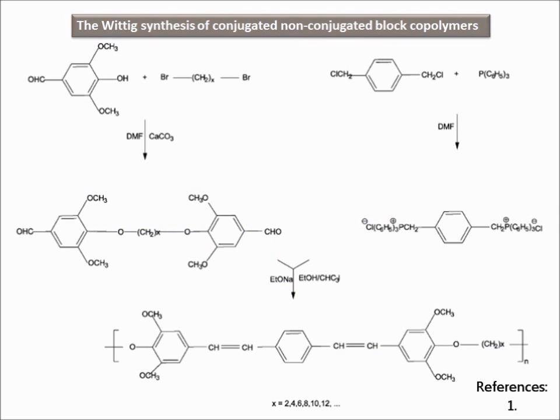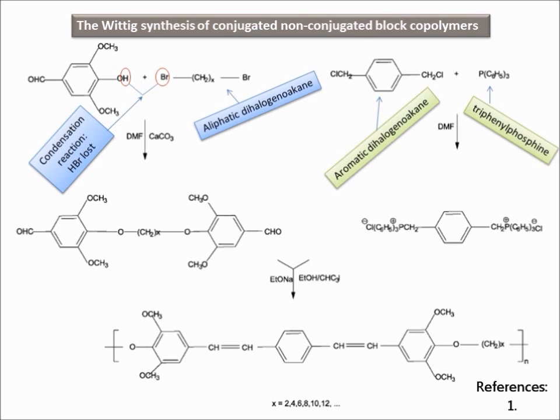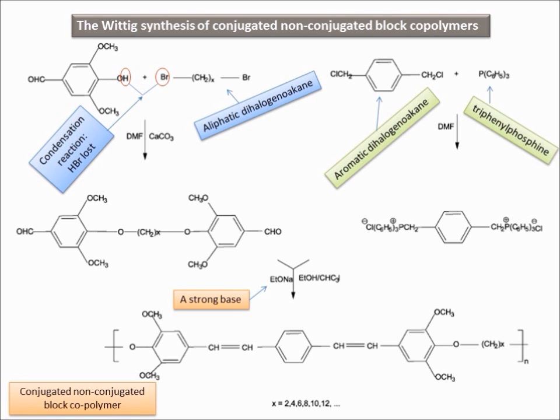So first we're making the different monomers of our copolymer, and then in the presence of a strong base, these monomers will react together in a polycondensation reaction, via the Wittig mechanism, which you will learn about in uni, to form our conjugated, non-conjugated block copolymer.